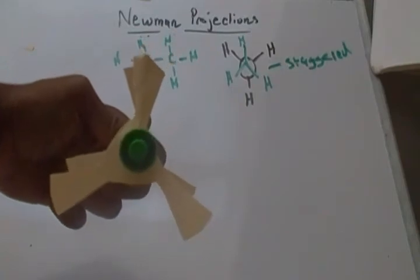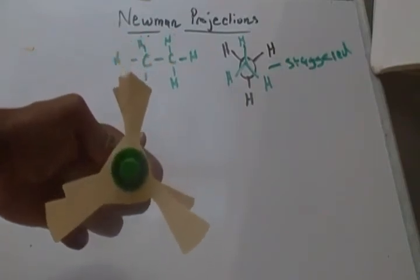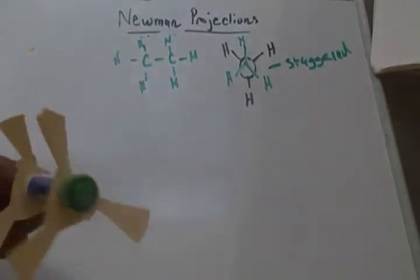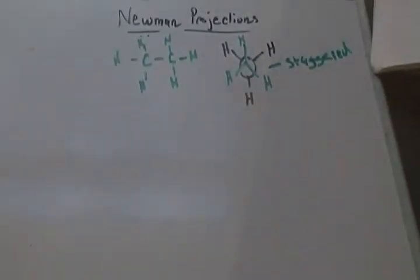Now you can barely see the carbons in the back. That's known as an eclipsed state. And the Newman projection depicts that.